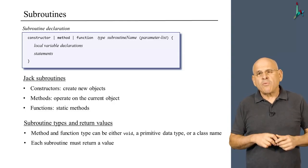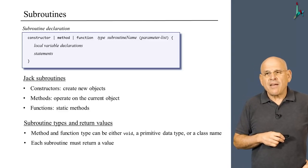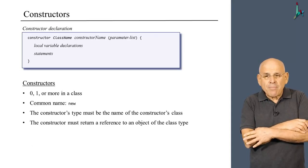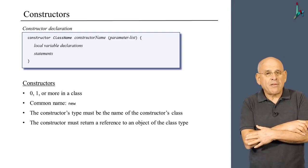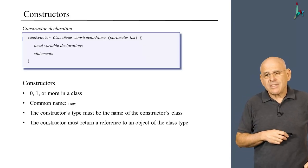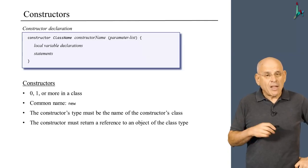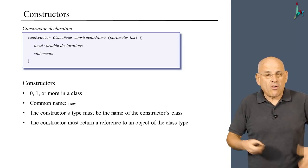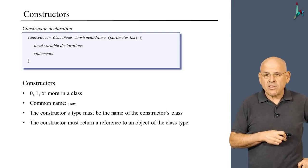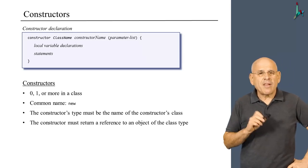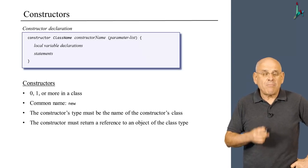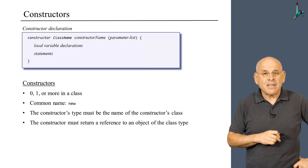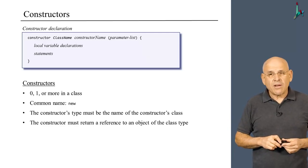Constructors are somewhat privileged methods with their own strange rules. A constructor is designed to create new objects. There may be zero, one, or more constructors in a class. The common name that Jack programmers use for a constructor is new, but if you have more than one constructor you may need several or more descriptive names. The type of the constructor must be the name of the class to which it belongs, and the constructor must return a value—an object of the class type.